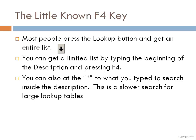Notice that black down arrow. Most folks will get to a field that has that black down arrow and press it, then work with the lookup list. You can make that a little easier by typing the beginning of the description of the item that you're looking up and pressing F4.